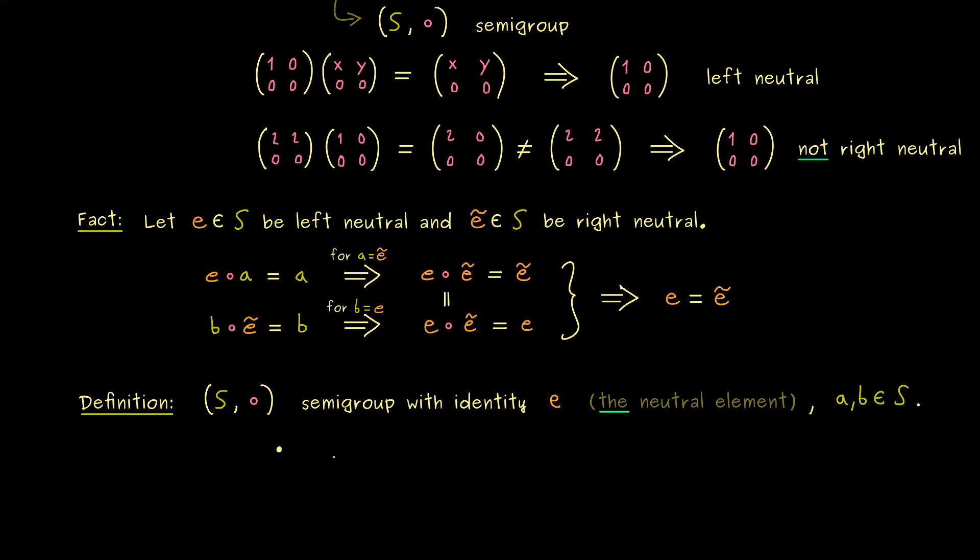Now first let's take an element X from the semi-group and we call it a left inverse of the given element A if X circle A is equal to the identity. So you could say X is an element that brings A to the neutral element.